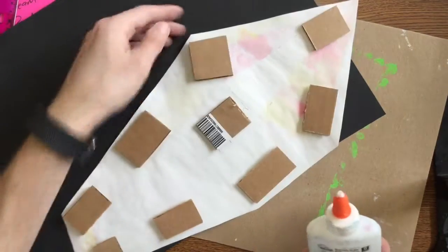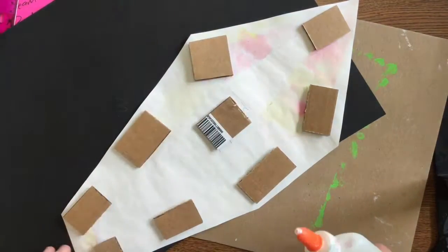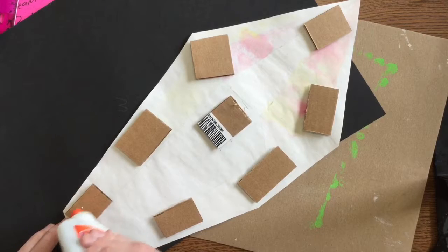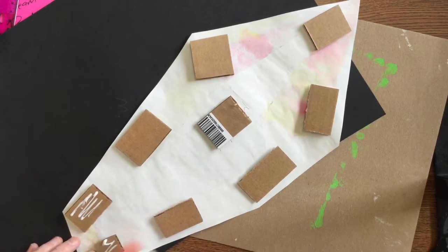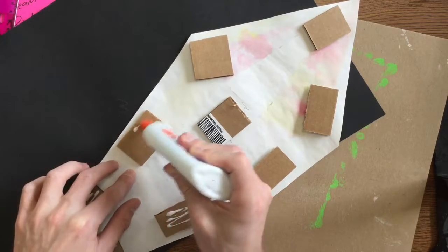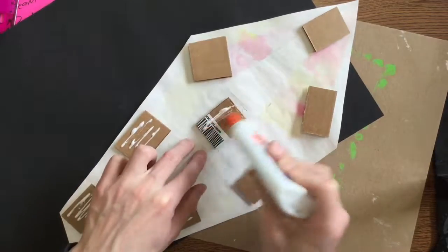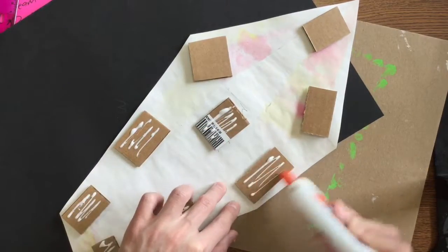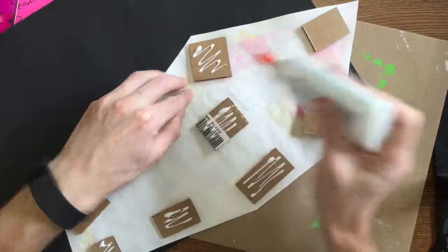Alright, so I've got some cardboard pieces glued onto the back of my mineral. Put a little bit of glue on the other side of these and then this can get flipped over and glued down. You're going to want to make sure you give this one a good back massage when you flip it over onto your background.